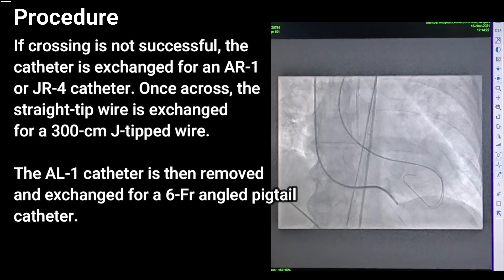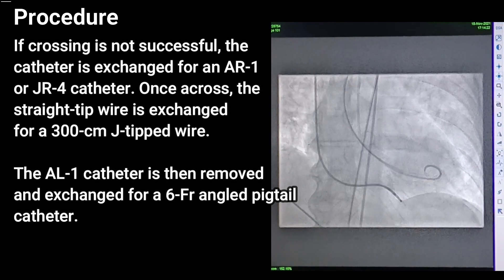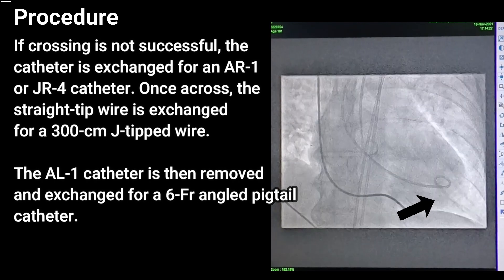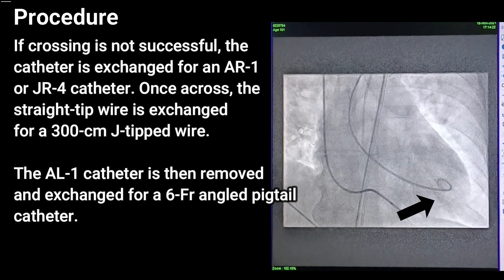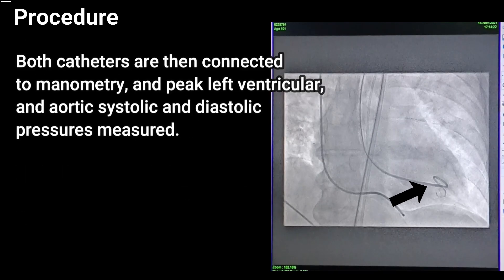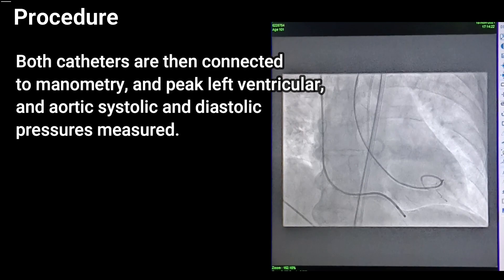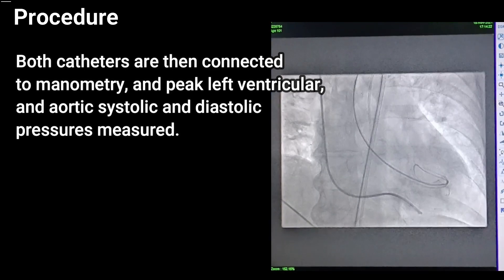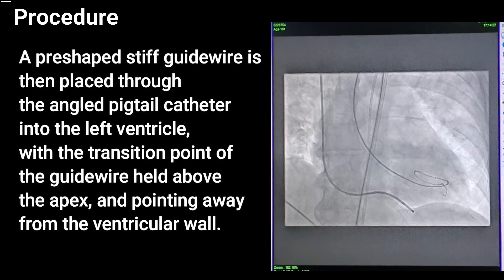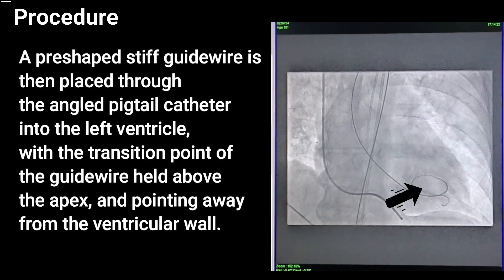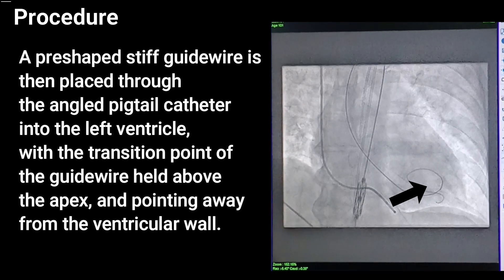If crossing is not successful, the catheter is exchanged for an AR1 or AR4 catheter. Once across, the straight-tip wire is exchanged for a 300-centimeter J-tipped wire. The AL1 catheter is removed and exchanged for a 6-French angled pigtail catheter. Both catheters are connected to manometry, and peak left ventricular and aortic systolic and diastolic pressures are measured.